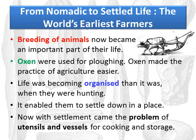Breeding of animals now became an important part of their life. Breeding is a technique that ensures the improvement of a farm animal generation after generation. Our historic people understood the importance of breeding and started practicing it. Oxen were used for plowing, so agriculture improved. Oxen made the practice of agriculture easier and could do the work more efficiently.